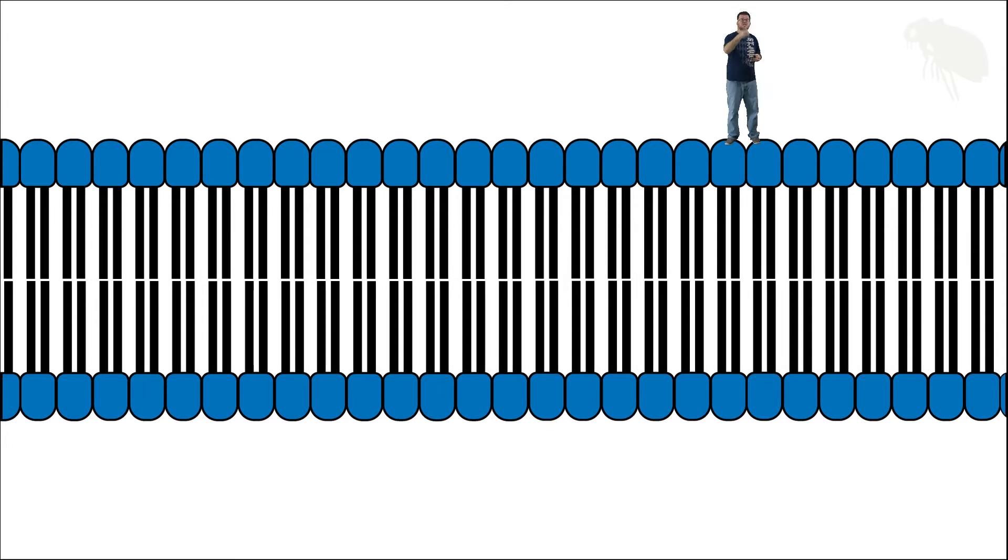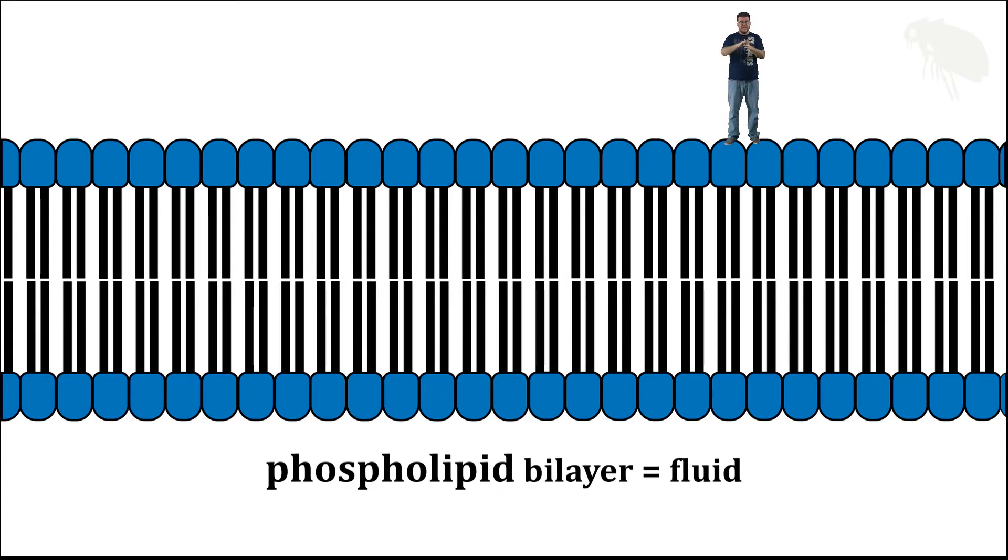At this same time, individual hydrogen bonds, as I mentioned, are weak and transient. So we can't hold any one phospholipid in a fixed position. They move around. Hence, the membrane behaves like a fluid. It's not a solid. The membrane has parts that are constantly moving.